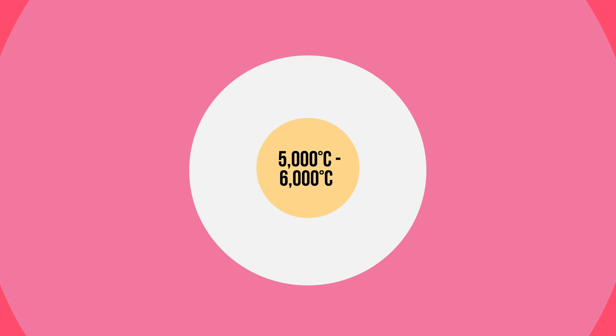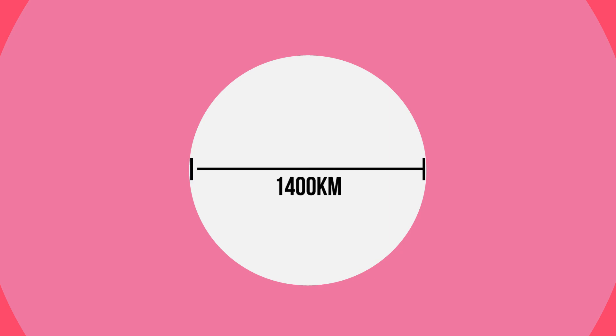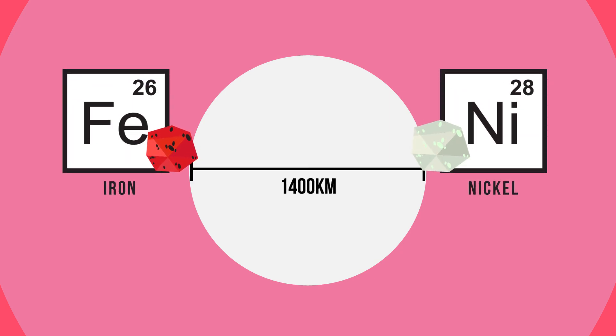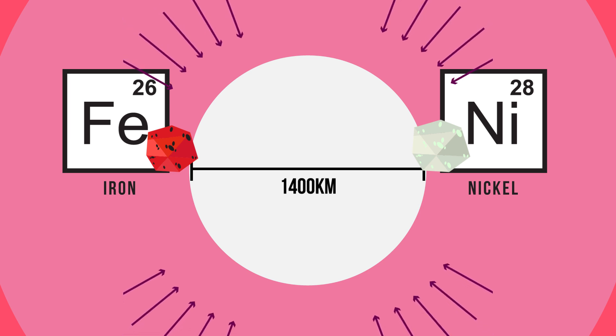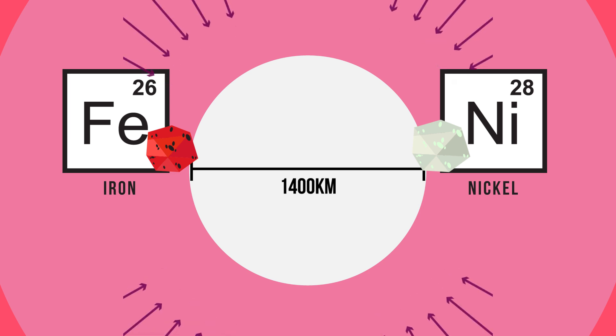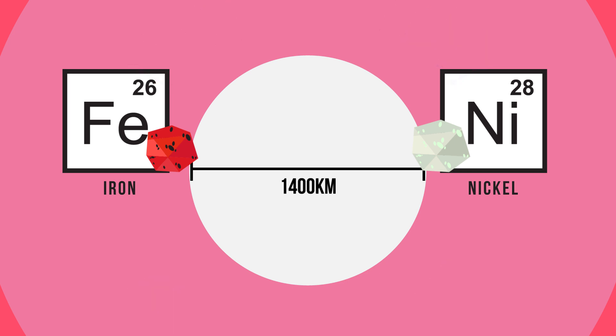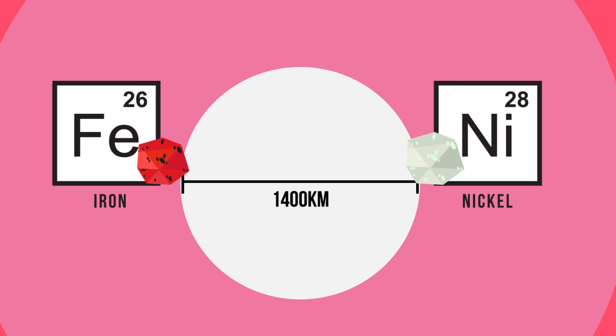The inner core is the hottest part of the Earth, with temperatures between 5,000 to 6,000 degrees Celsius — that is as hot as the surface of the Sun. It is roughly 1,400 kilometers thick and is also primarily iron and nickel. The air pressure here is 3 million times that of sea level, which causes the core to become solid metal.